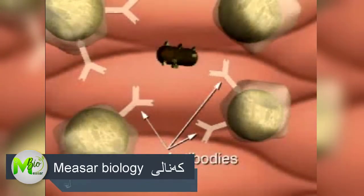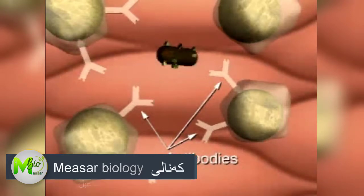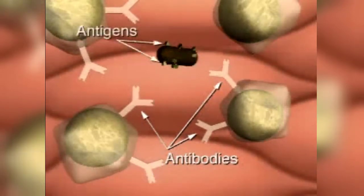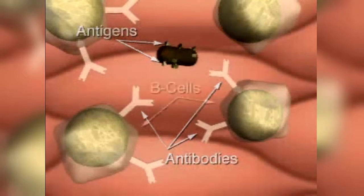Antibodies are proteins that play an integral role in the complex system of specific immunity. They bind to and inactivate foreign proteins called antigens. Each type of antibody binds to one kind of antigen molecule.